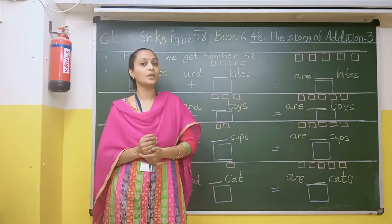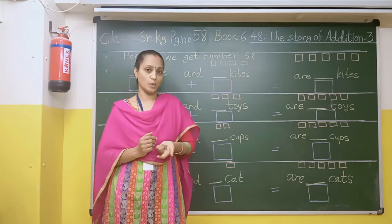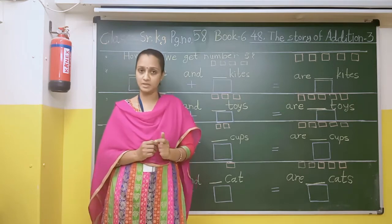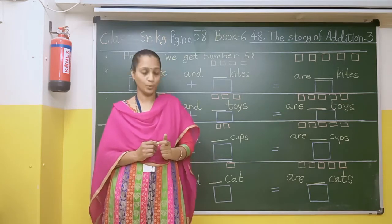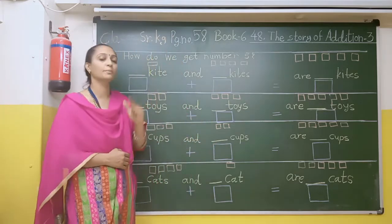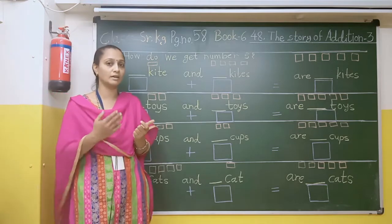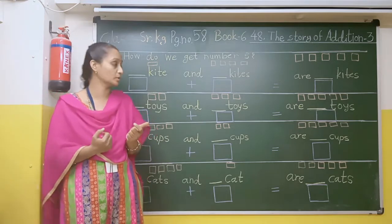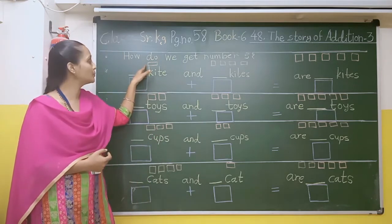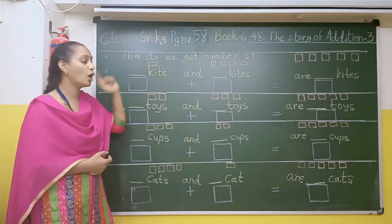Today we will get number 5. How do we get number 5? Here there is one image of a kite. How many is it?